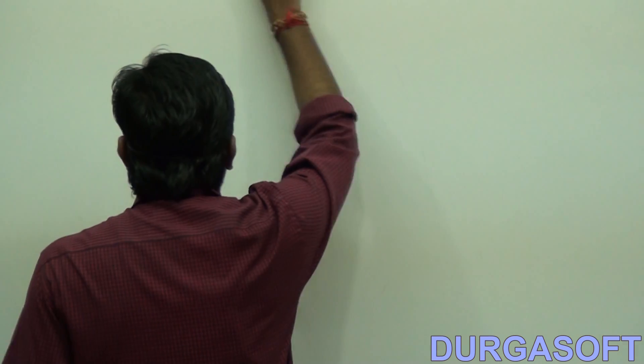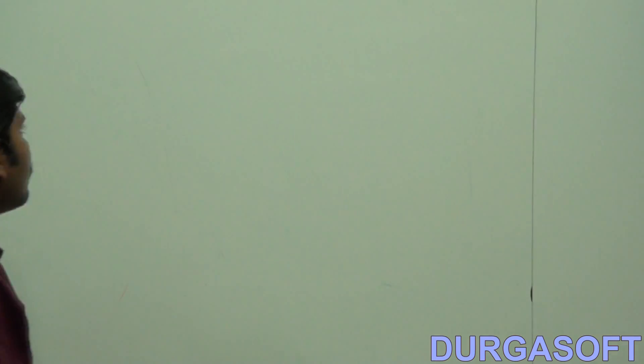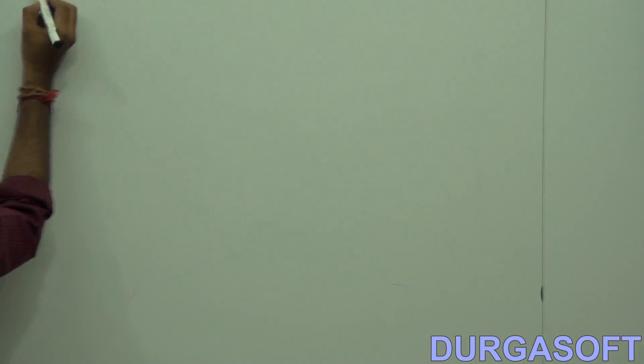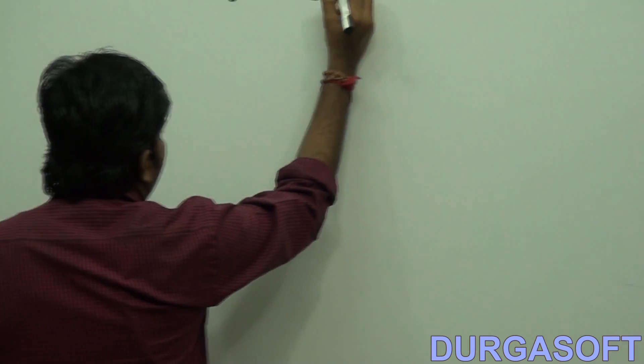Last one — JavaWS. Can you tell what that is? Don't say Java Web Services. Within bracket, what? JavaWS means — the WS stands for Web Start. JavaWS is the Java Web Start utility.